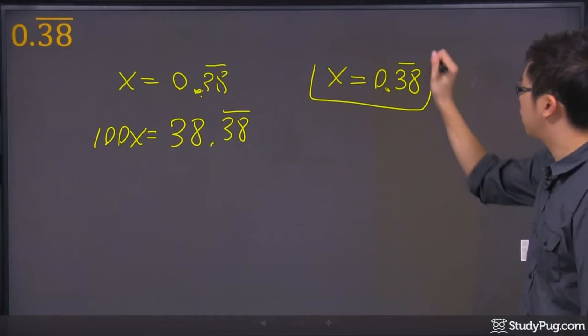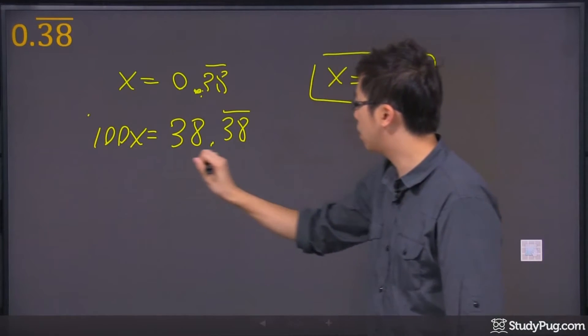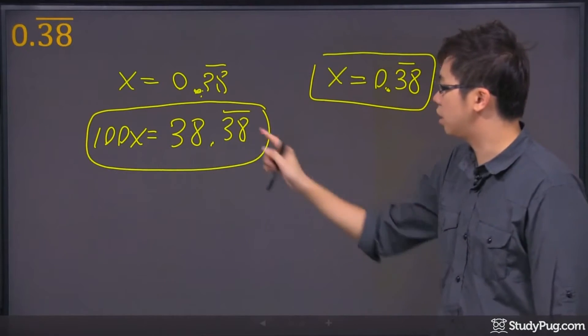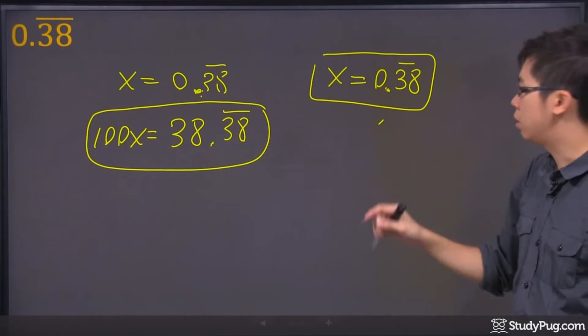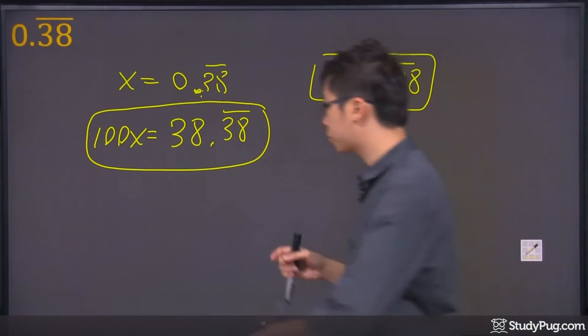Once you get this equation right here and this equation right here, the next thing you have to do is just take this and subtract this. But there's a way to do this one right here. I'll show you.